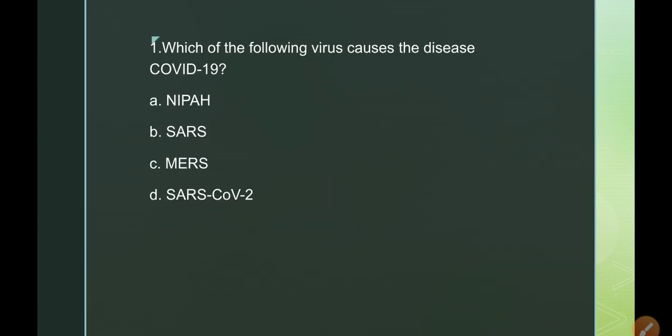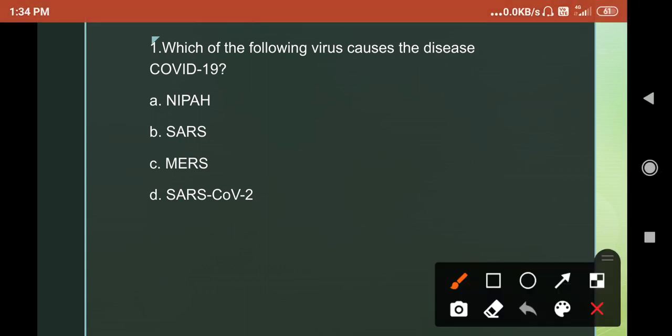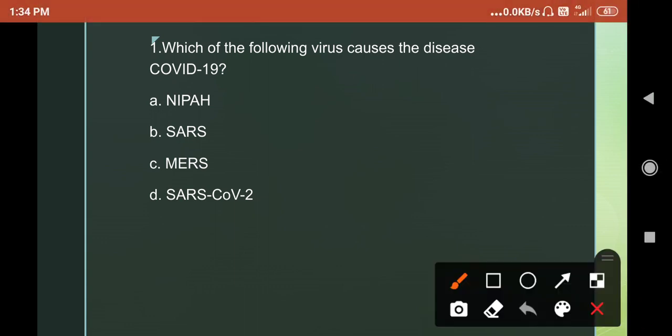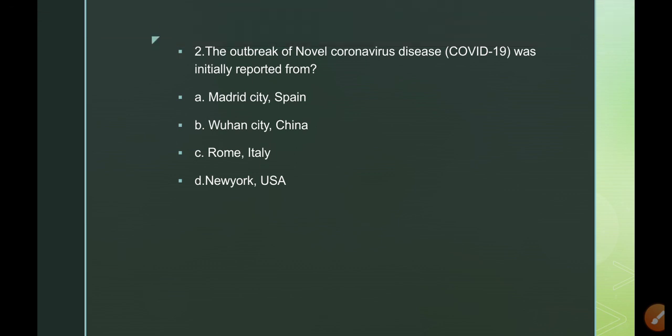First question: which of the following viruses causes the disease COVID-19? A. NIFA, B. SARS, C. MERS, D. SARS-CoV-2. Everyone should know that COVID-19 is caused by SARS-CoV-2. SARS stands for Severe Acute Respiratory Syndrome, CoV stands for coronavirus, and 2 indicates this is the second type of coronavirus affecting people.